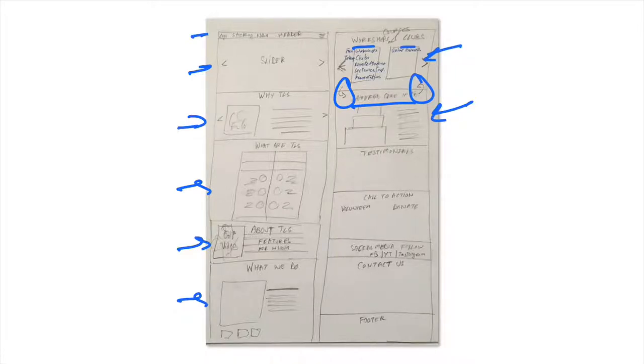Of course, for credibility, it's very important to give some testimonials. So that was the section here on testimonials. And then we will have a call to action which will be for the volunteers to seek their help in creating content or conducting workshops and maybe seek some donations online. Then there will be a section which will be the social media links and urging our viewers to talk about Timeless Life Skills. Then there will be a section on contact us—how can the audience get in touch with us—and maybe a footer.